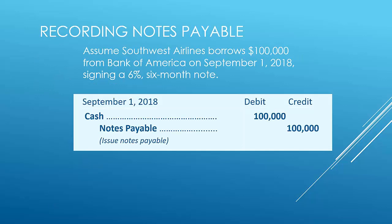Assuming Southwest Airlines borrows $100,000 from Bank of America on September 1st and signs a six-month note, when they sign the note they receive the $100,000 — so cash increases — and notes payable also increases by $100,000.